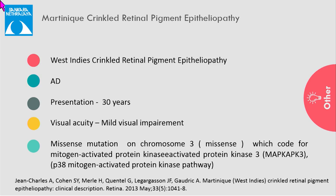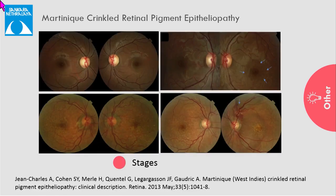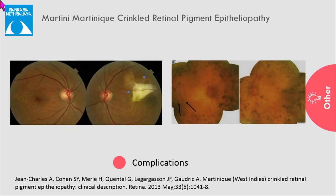Martinique crinkled retinal pigment epitheliopathy was first described in 2013 in three families originating from Martinique, a West Indies island. The onset is generally at 30 years of age. It is caused by a missense mutation in MACF1-AP3 gene, involved in basement membrane modeling. On fundus examination, there are diffuse deep white lines seen in the macula giving a crinkled appearance. The preclinical stage is normal; stage 1 shows a dried-out soil pattern; stage 2 shows progression to the peripheral retina; and stage 3 is associated with PCV formation, with complications including disciform scar formation and peripheral pigmentary changes.